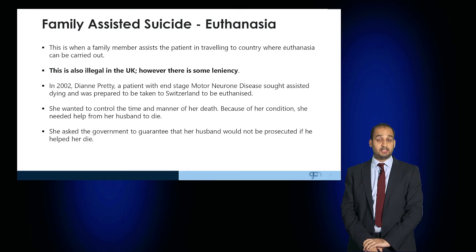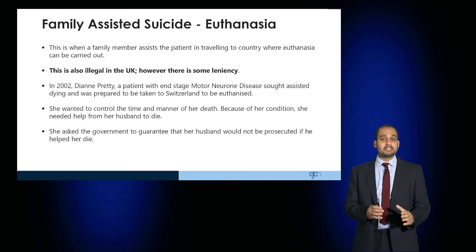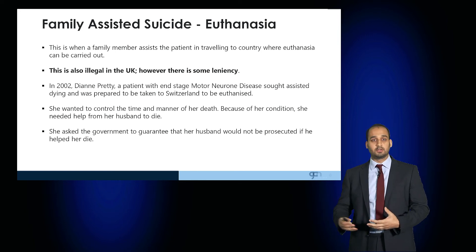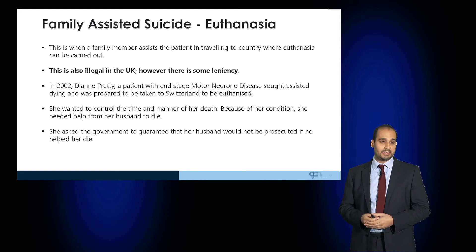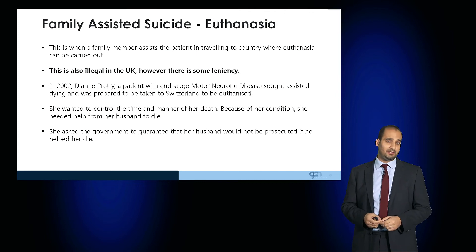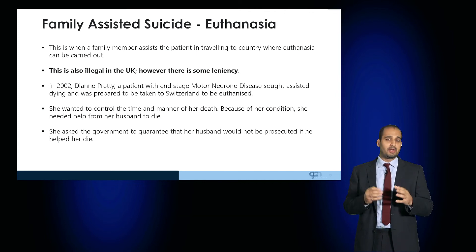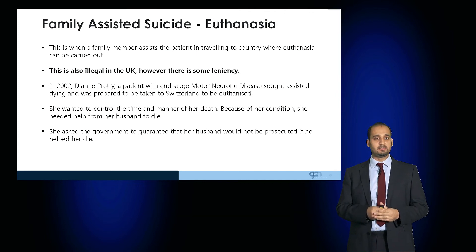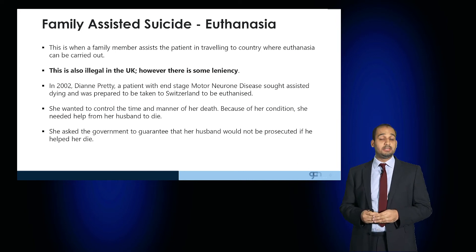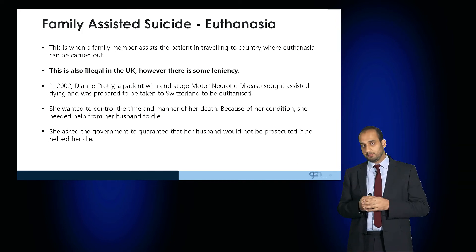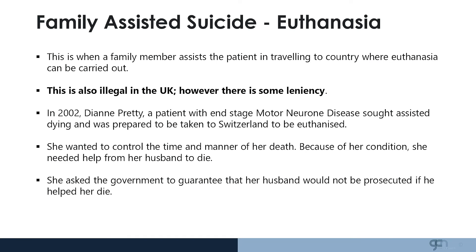Family-assisted suicide is where a family member assists the patient to travel to a country where euthanasia can be carried out. This is also illegal in the UK but there are some specific circumstances. In 2002, Diane Pretty, a patient with end-stage motor neurone disease, sought assisted dying and was prepared to be taken to Switzerland to be euthanised. She wanted to control the time and manner of her death, and because of her condition she could not travel herself and needed the help of her husband.